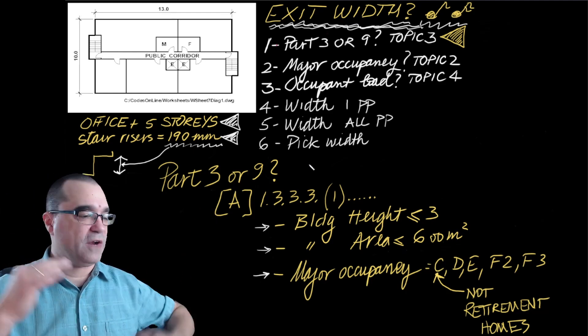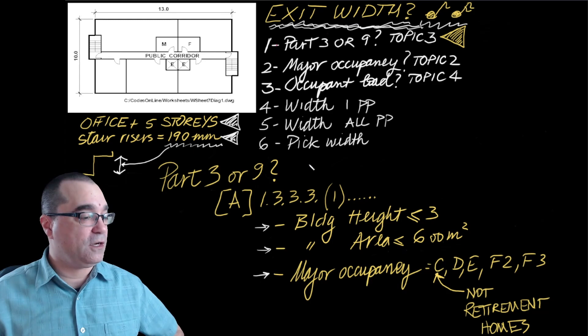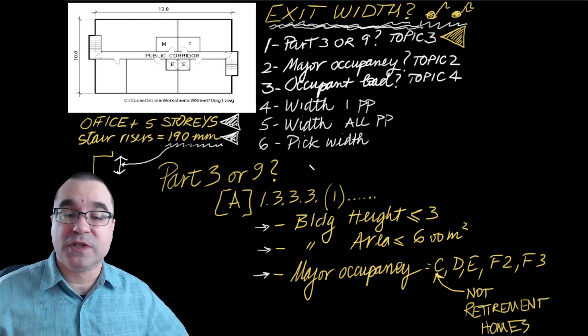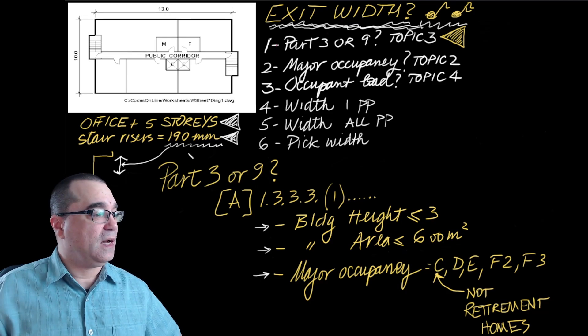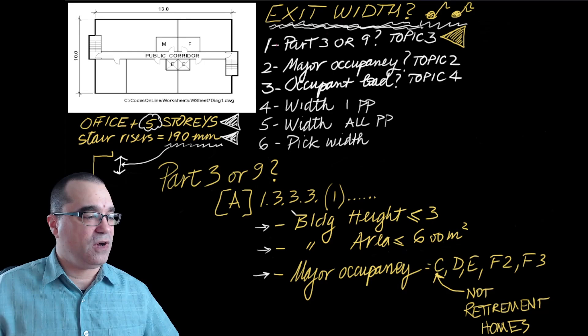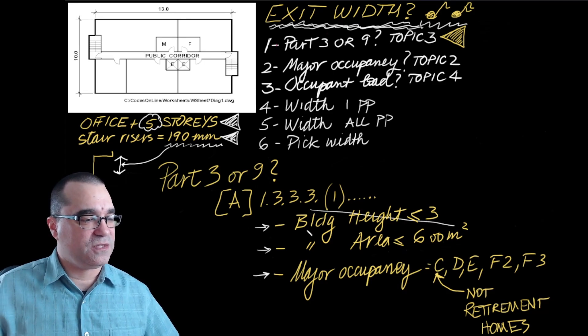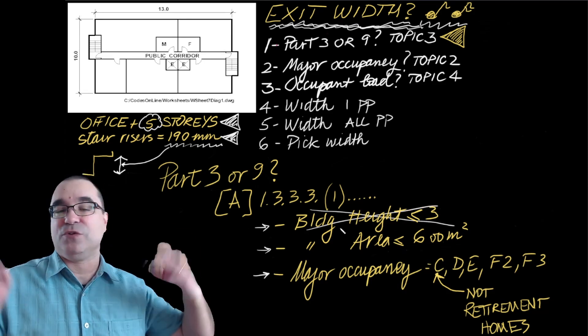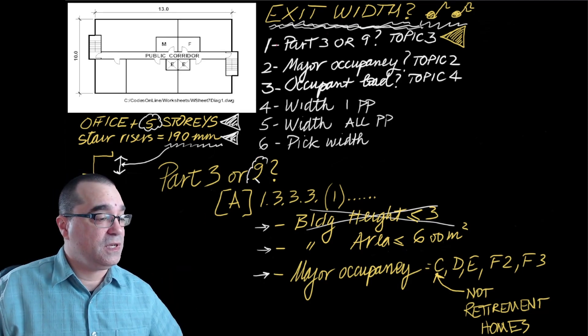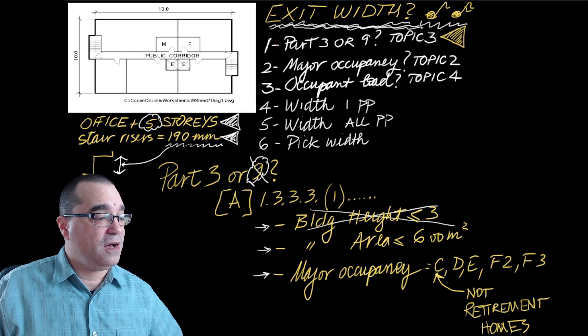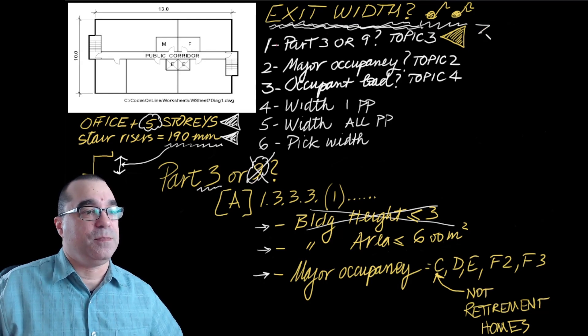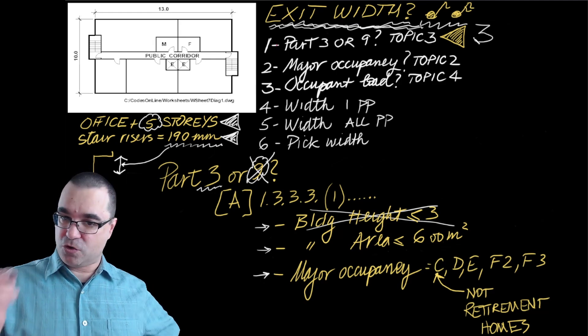Let's take them in order. The first one is to show that the building has to be no more than three stories. Our building is five stories, so automatically this fails. I don't have to even look at the other two conditions. This tells me it's not a Part 9 building and instead is a Part 3 building.